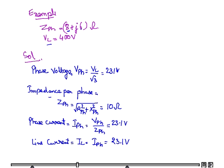So the line current IL is the phase current IPH, which is 23.1 amperes.